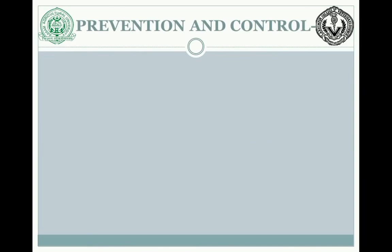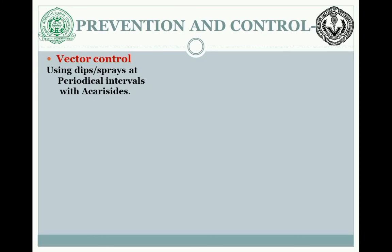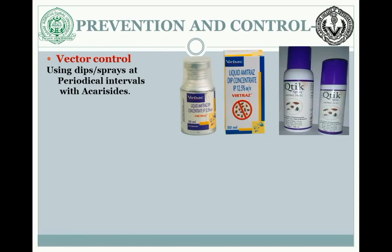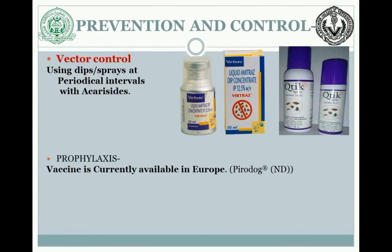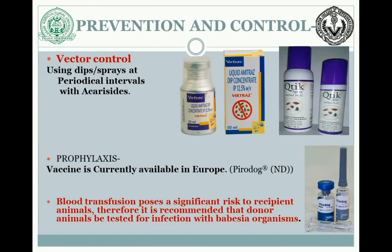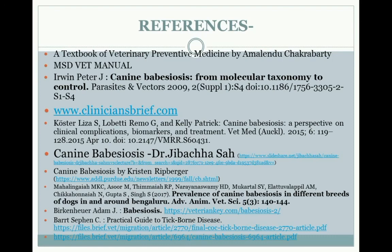For prevention and control, vector control is the key — dips or sprays at periodic intervals keep the animal free from ticks. A vaccine called Pirodog is available in Europe but not in our region. Blood transfusion carries significant risk, as blood from infected donors might cause a healthy animal to become infected. I'd like to mention the references from which I have taken all the information.